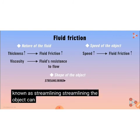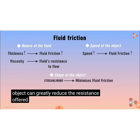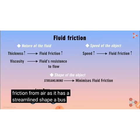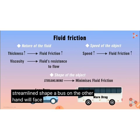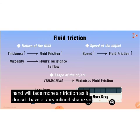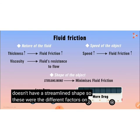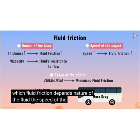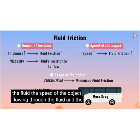With streamlining, an object can greatly reduce the resistance offered by the fluid. A car faces less friction from air as it has a streamlined shape. A bus, on the other hand, will face more friction as it doesn't have a streamlined shape. So these are the three factors on which fluid friction depends: the nature of the fluid, the speed of the object, and the shape of the object.